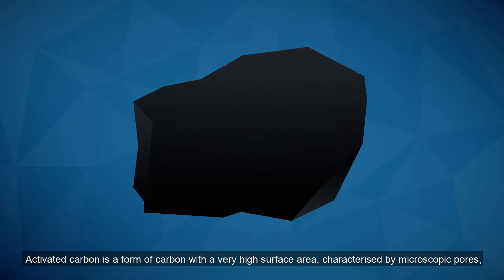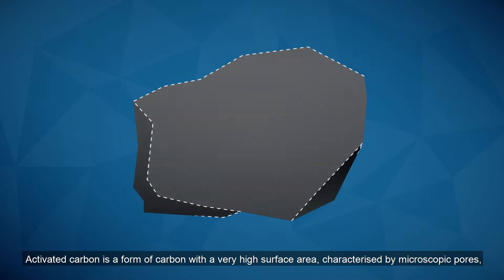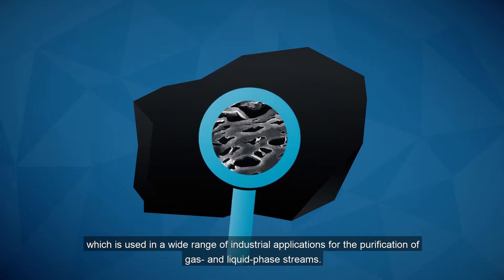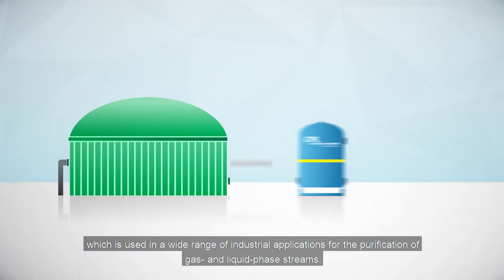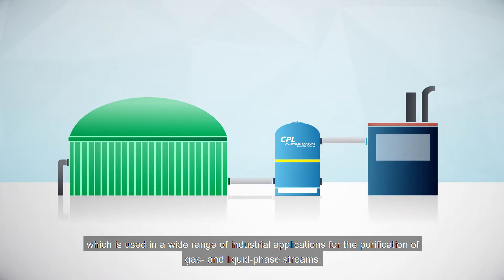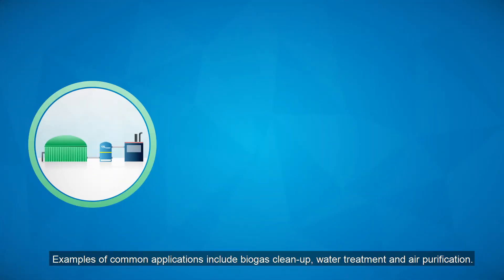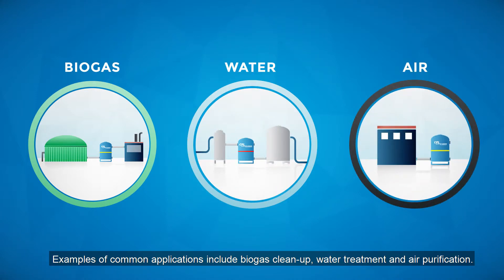Activated carbon is a form of carbon with a very high surface area, characterised by microscopic pores, which is used in a wide range of industrial applications for the purification of gas and liquid phase streams. Examples of common applications include biogas clean-up, water treatment and air purification.